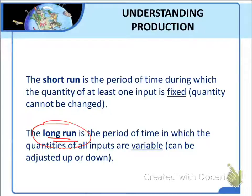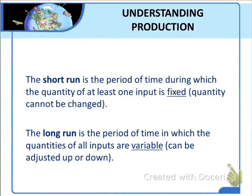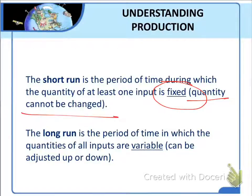There is no set period of time that distinguishes the short run from the long run. This is determined by the amount of time it takes to acquire new inputs in particular industries. If in the construction industry all inputs could be adjusted in as few as three months, then the short run in that industry is three months. If in the education industry it takes two years to add classroom space, then the short run is two years. A fixed input — like cranes or classroom space — is one whose quantity cannot be changed in the short run, regardless of how much output the firm decides to produce.